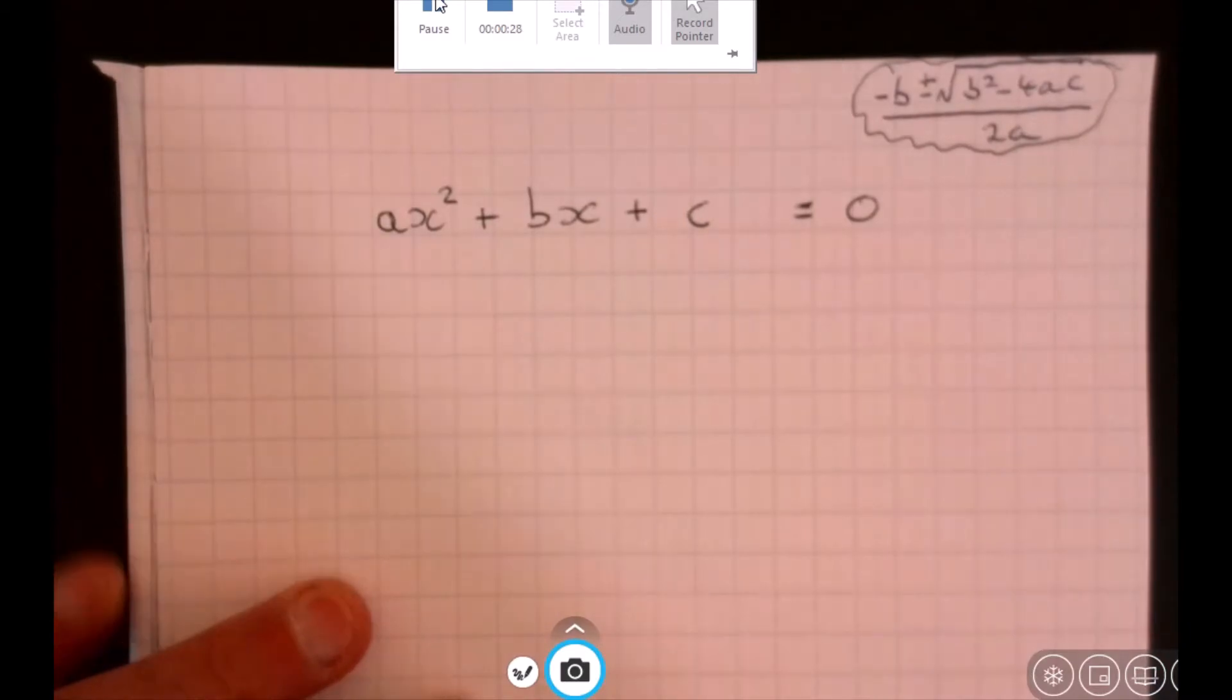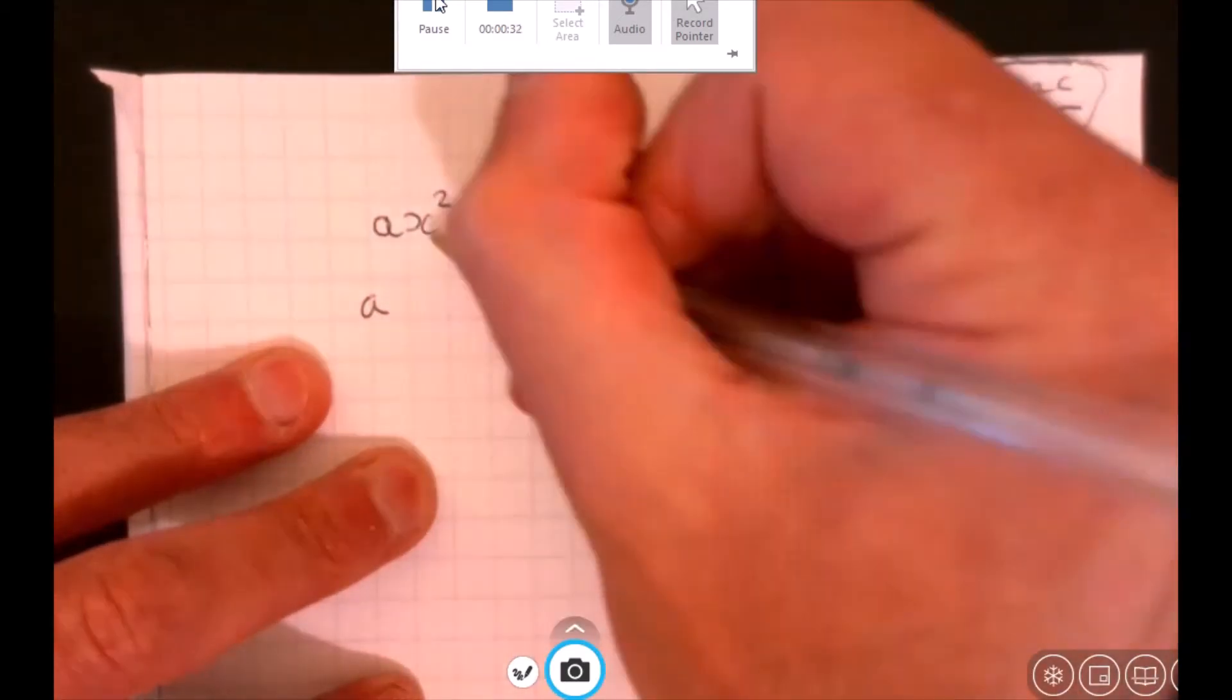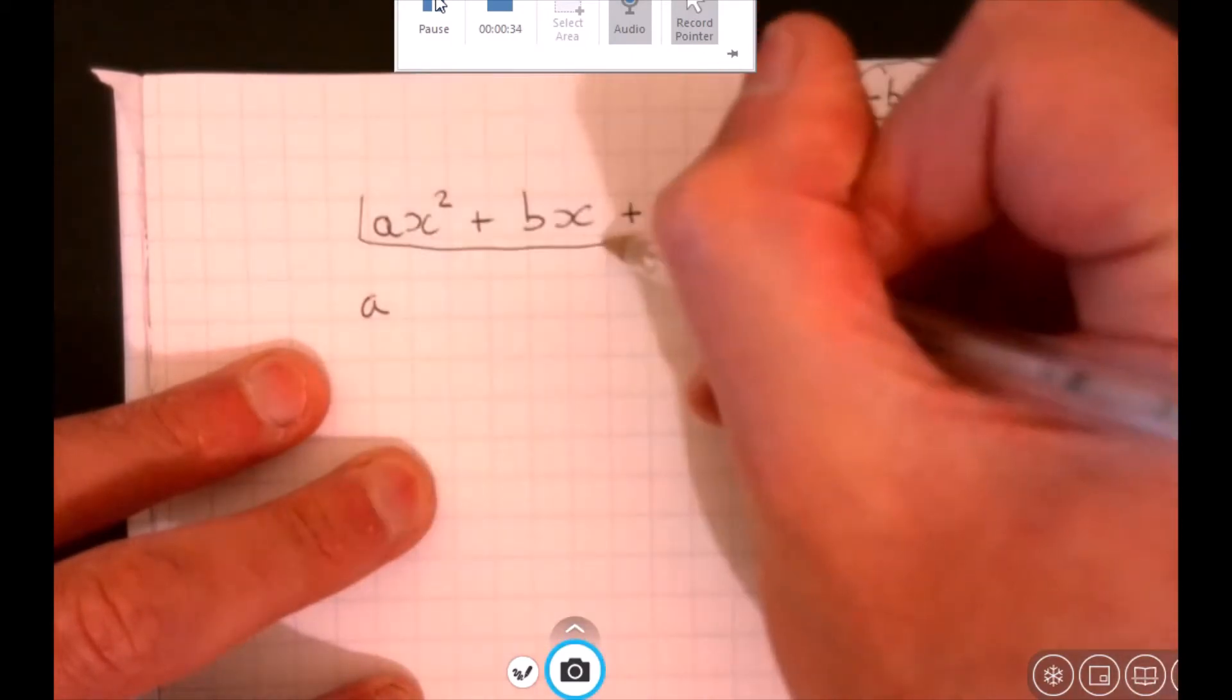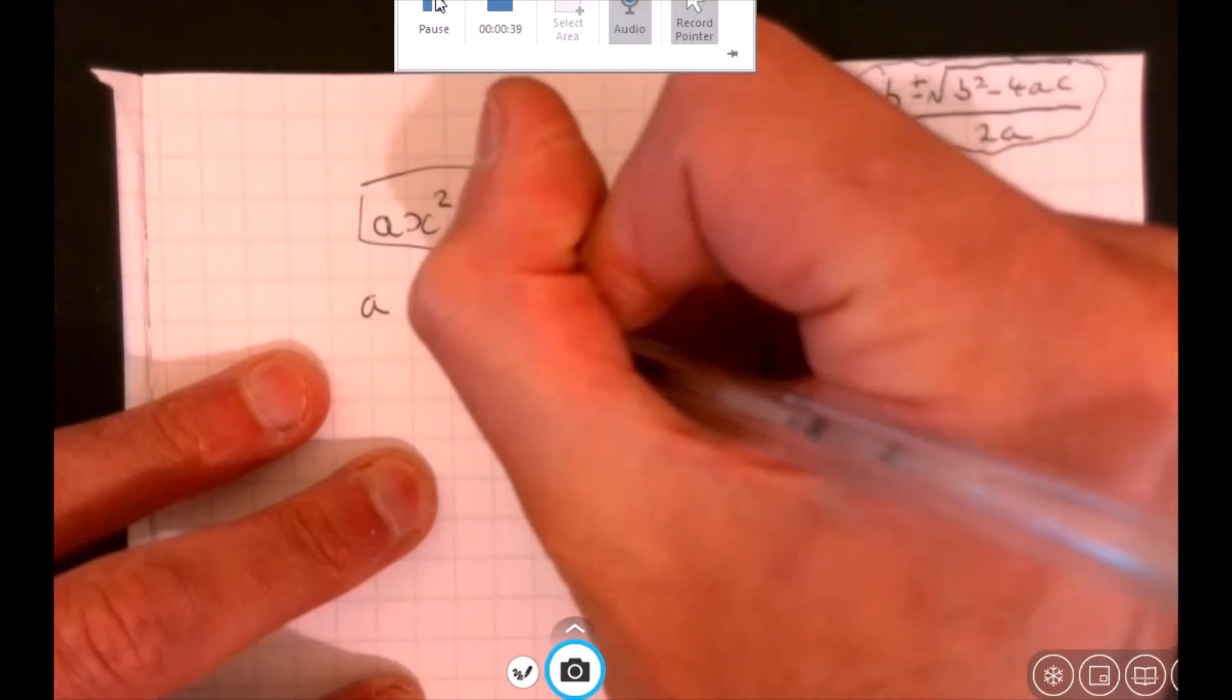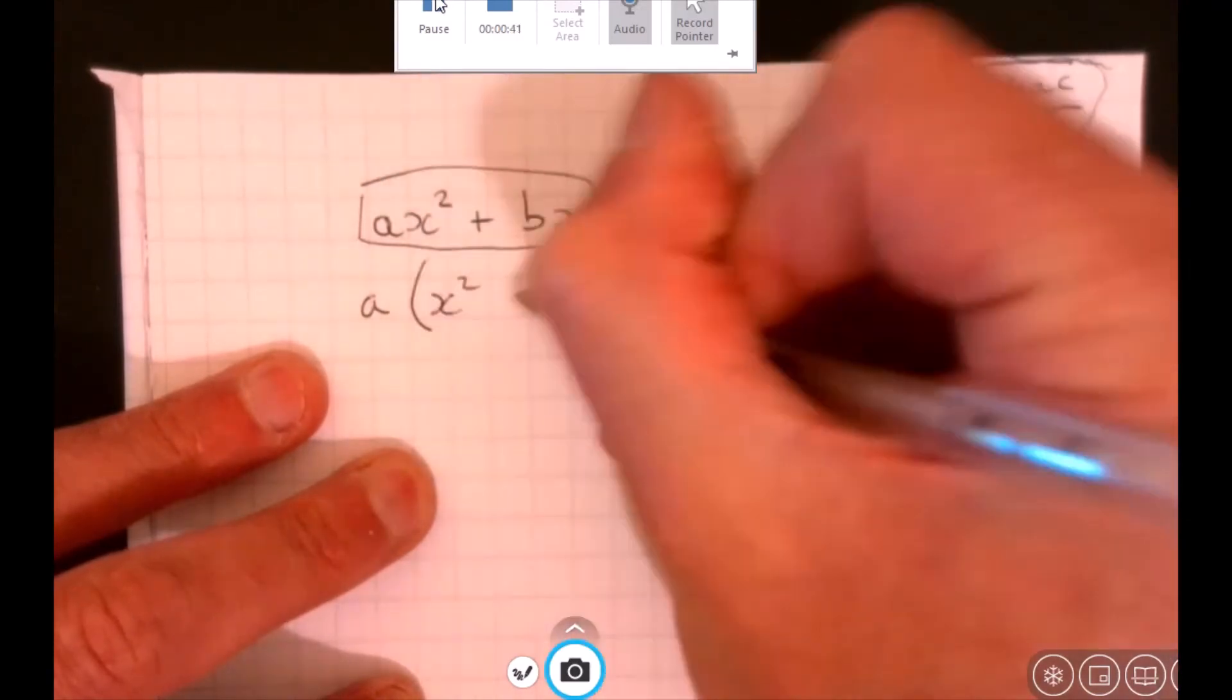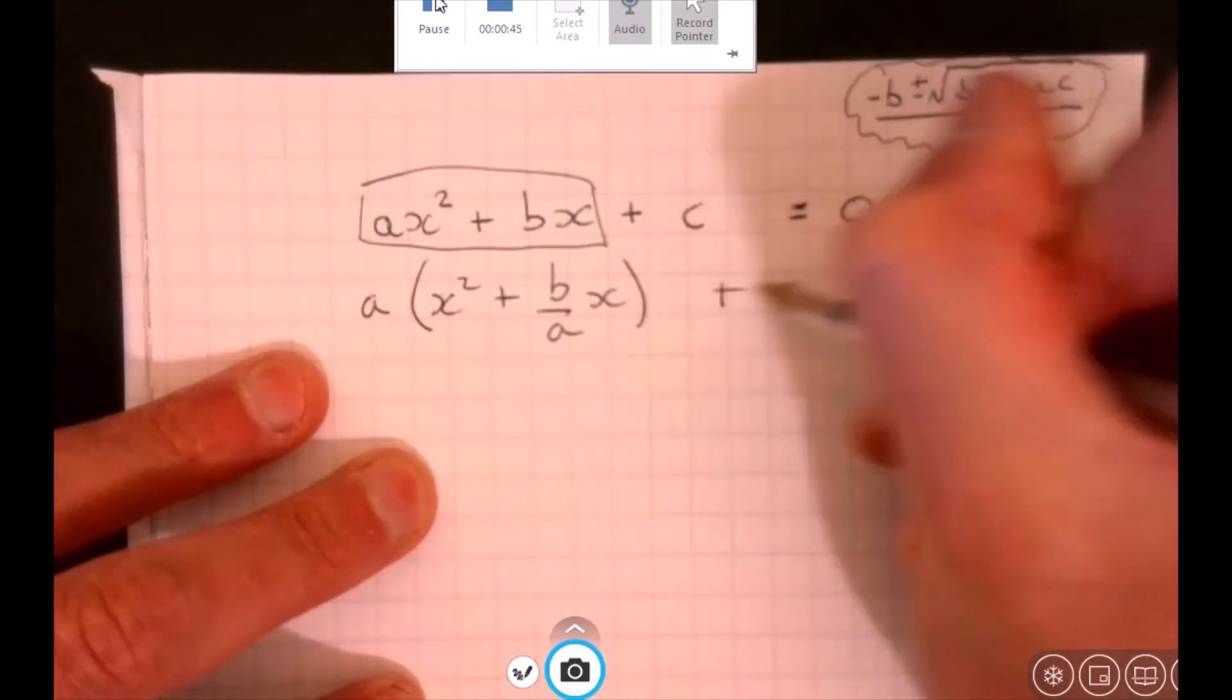Complete the square. Remember what we do - you just take a outside for a moment. I'm just thinking about how do we write this bit here. Then that's going to be x squared plus b over a x. All I've done is I've just parked this a outside just for a moment.